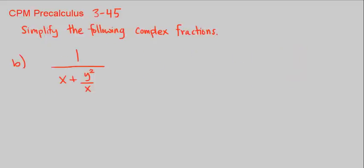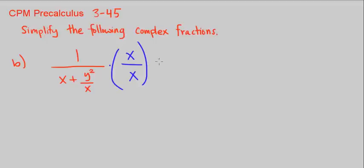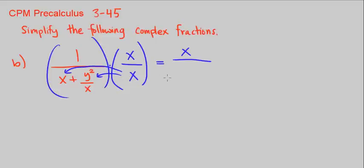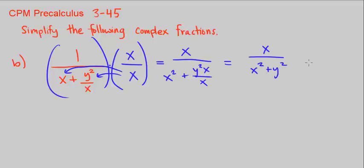Part B: we have only one fraction, and it's in the denominator — nothing in the numerator. So let's multiply by X over X. The only fraction we want to get rid of is there, so multiply across: 1 times X is X. We distribute X times both terms in the denominator: X squared plus Y squared times X over X. Those cancel, leaving us with X over X squared plus Y squared. That's the simplified version of this complex fraction.